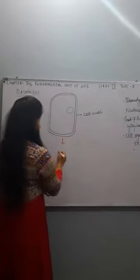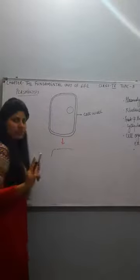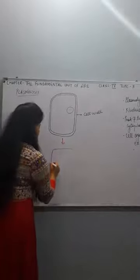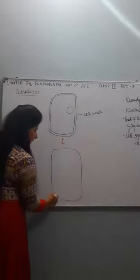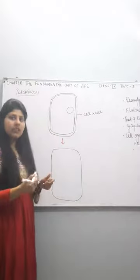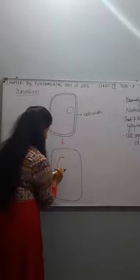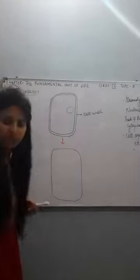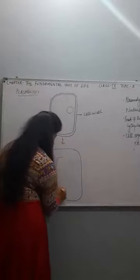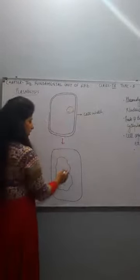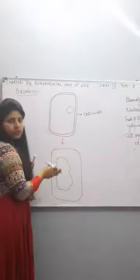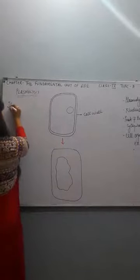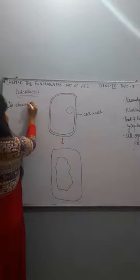After some time, the condition will be like this: the cell wall, being the tough part, will remain intact. It will not get disturbed due to plasmolysis. But what will happen to the plasma membrane? It will shrink. So now the plasma membrane has shrunken, and this process — the shrinkage of the plasma membrane due to osmosis — is known as plasmolysis.